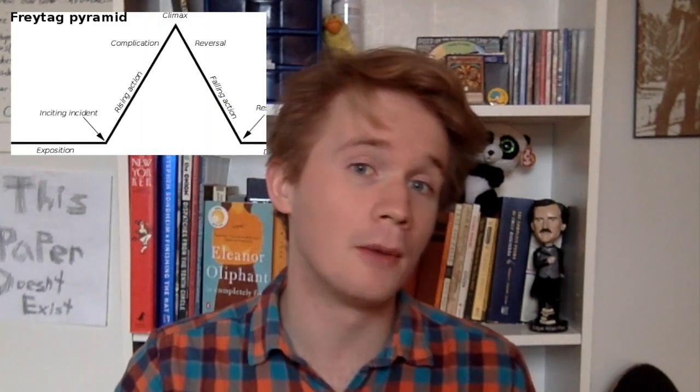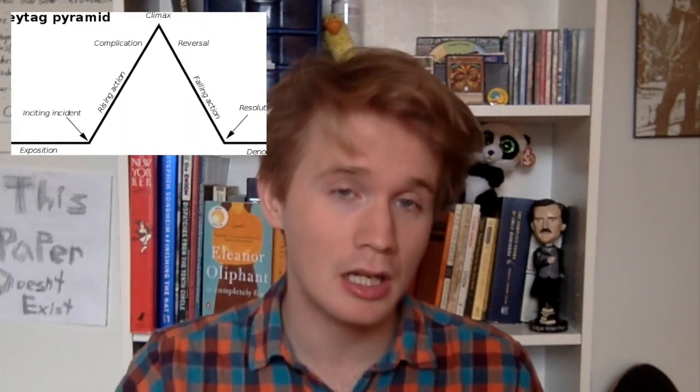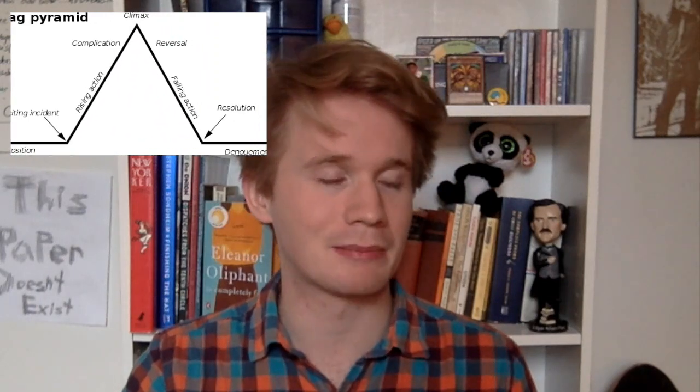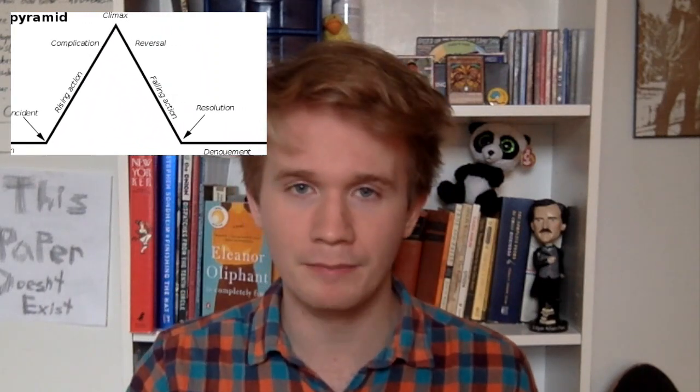Characters need to exist within a plot in order to go through some kind of structure and in order to learn a lesson. There are many different ways to talk about plot, but today we're going to be talking about one specific version called the five-act structure. The five-act structure is represented by this graphic, often called Freytag's Pyramid, which is really useful in talking about how plays and stories are usually put together.